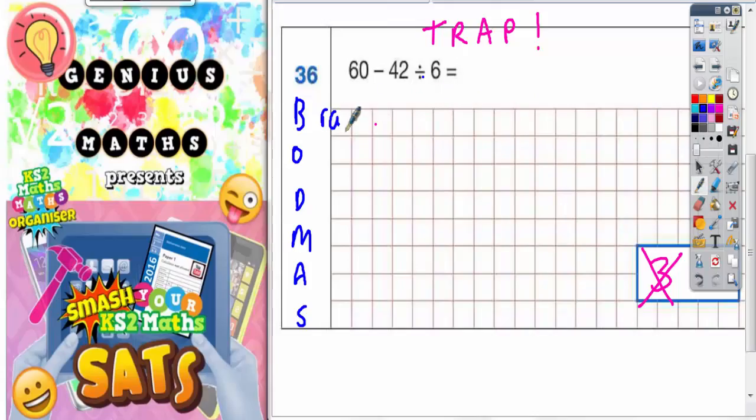The B stands for bracket. The O stands for squared and cubed. It actually stands for order but in this topic it means squared and cubed. D stands for divide. M is multiply. A is add. S is subtract.